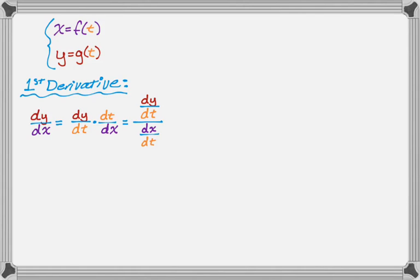But then there's some easier notations, so you might have something else in your mind. So dy dx can also be written as g prime of t over f prime of t, because remember we said y is g of t and x is f of t.